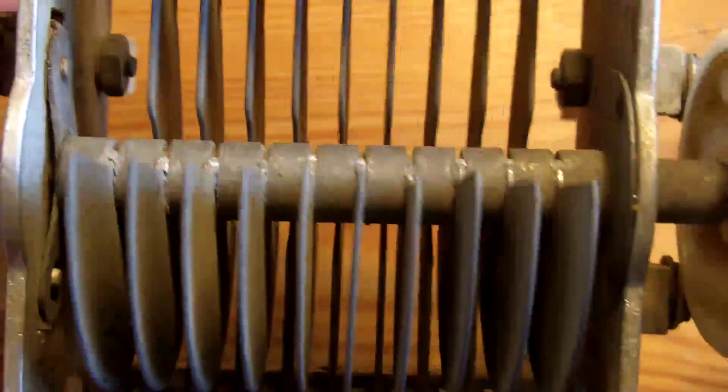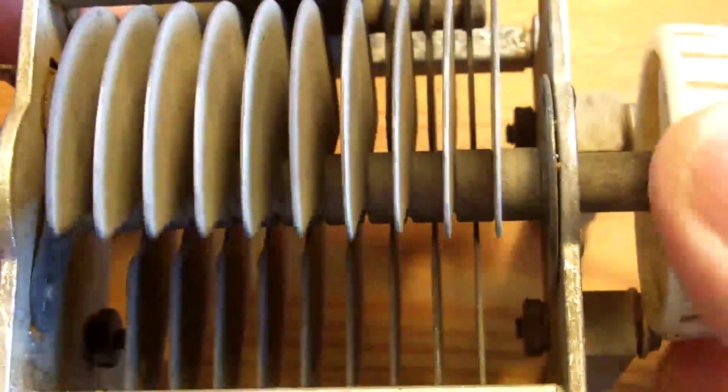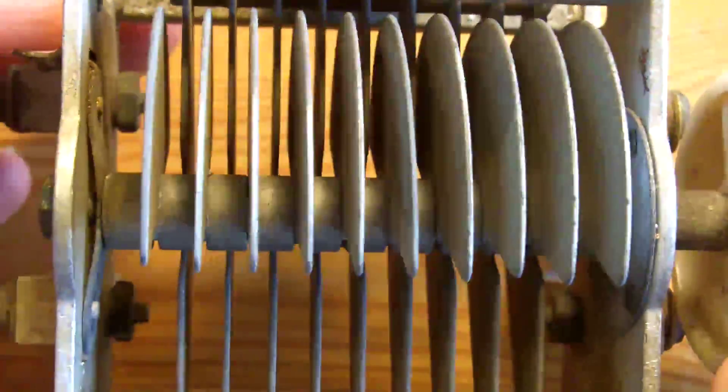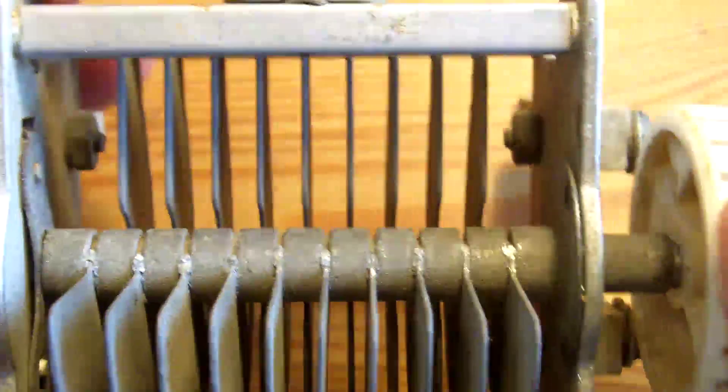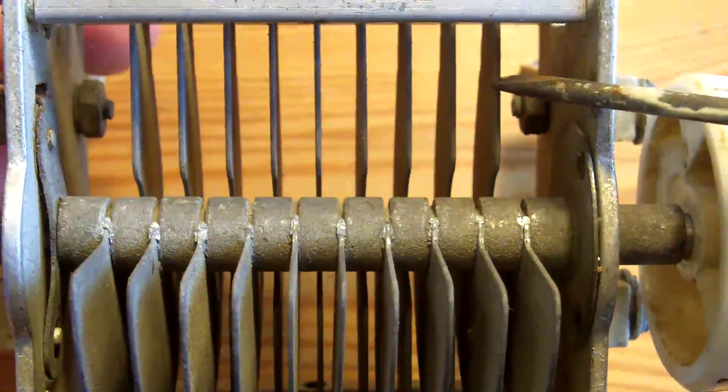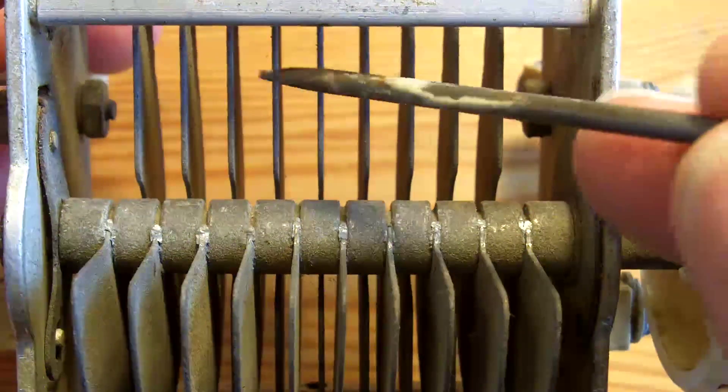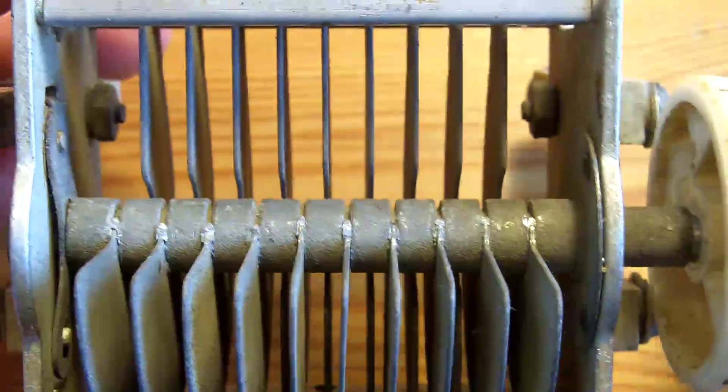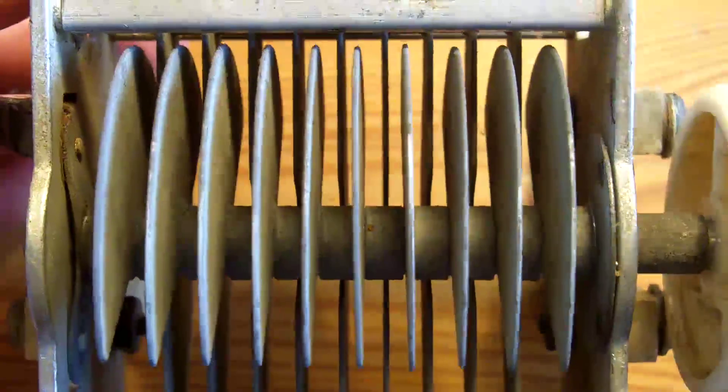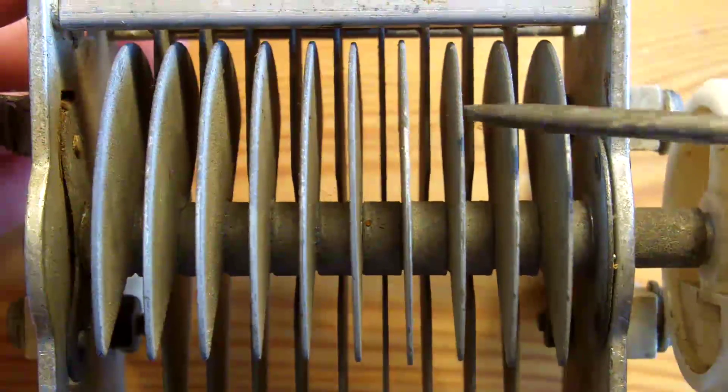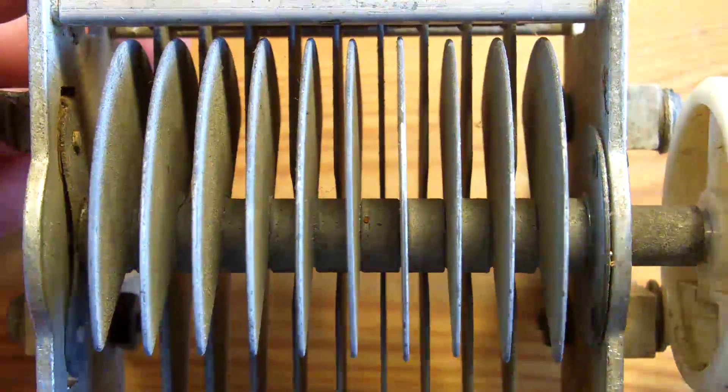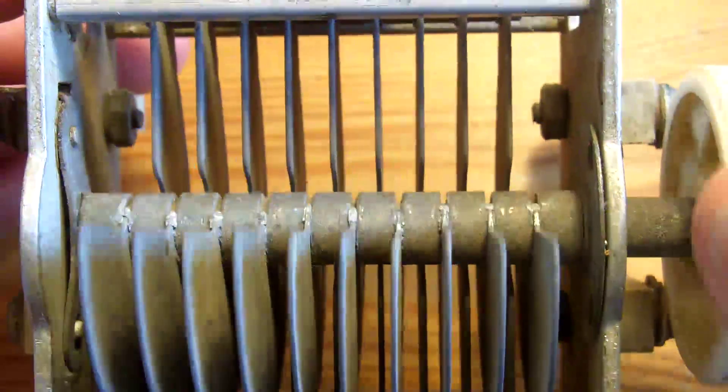OK, so this is a variable capacitor. The dielectric is air. There's no insulation in there. And if we look at this, we've got 1, 2, 3, 4, 5, 6, 7, 8, 9 fixed vanes. And we've got 10. Yeah, 1, 2, 3, 4, 5, 6, 7, 8, 9, 10. We've got 10 moveable vanes.